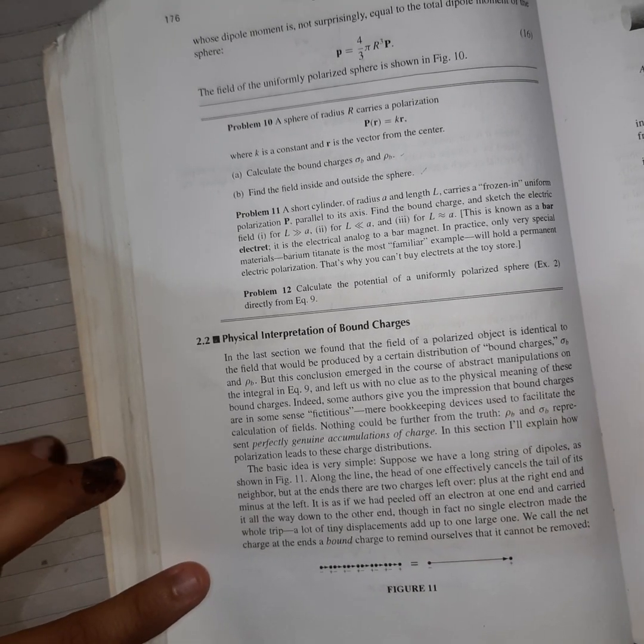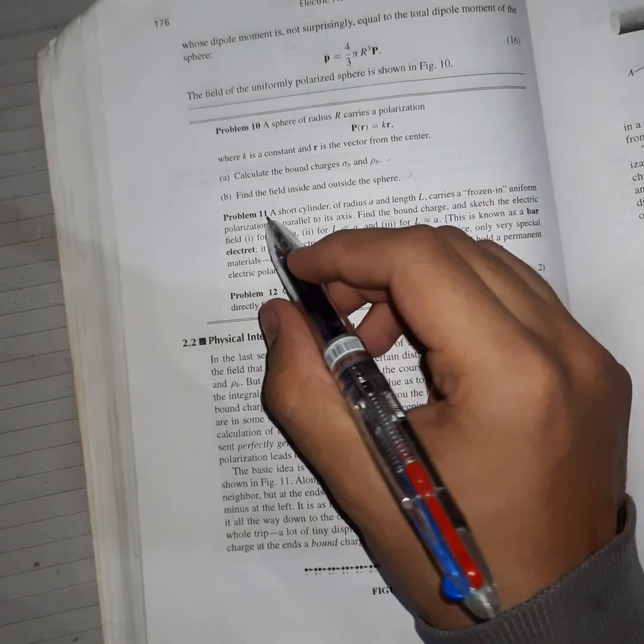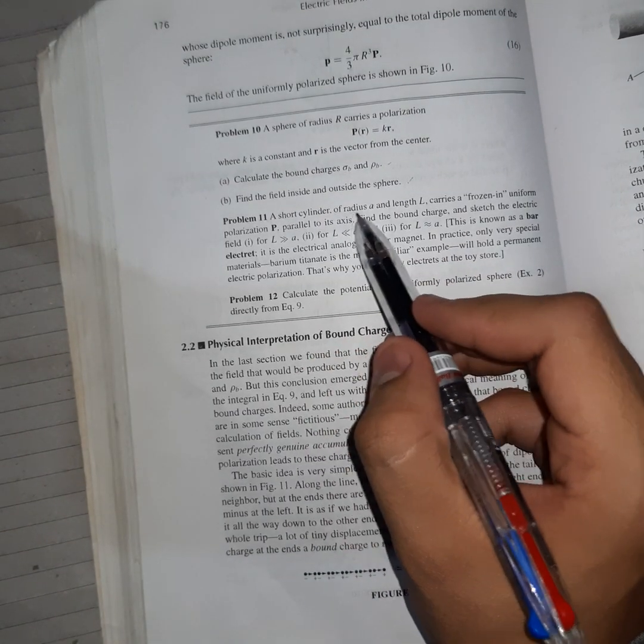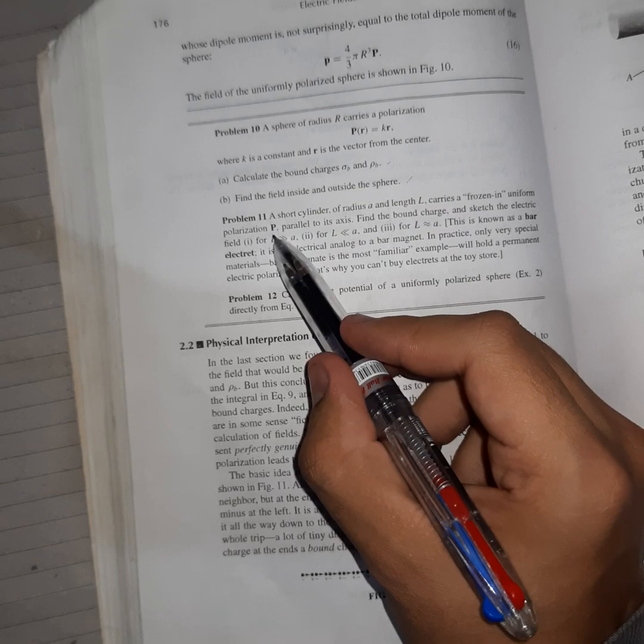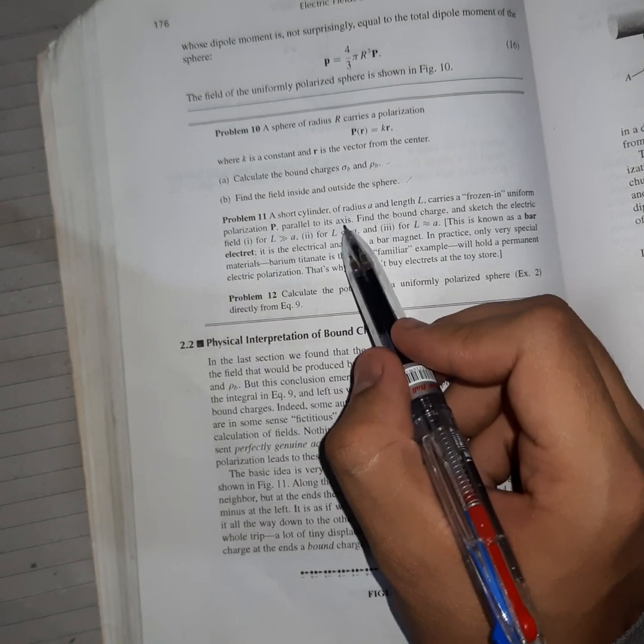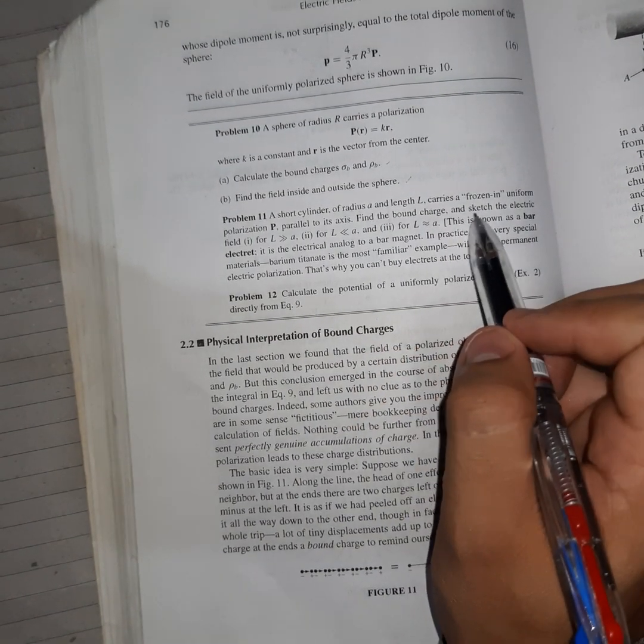So hello everyone, welcome back. Now let us start problem number 11, which is a short cylinder of radius a and length l carries a frozen-in uniform polarization p parallel to its axis. Find the bound charges and sketch the electric field.